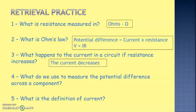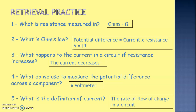What do we use to measure the potential difference across a component? If we have any sort of equipment in a series or parallel circuit, we would use a voltmeter. And finally, what is the definition of current? Current is the rate of flow of charge in a circuit — how quickly charge is flowing past a certain point.